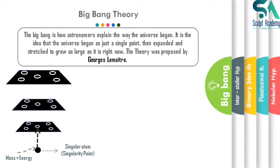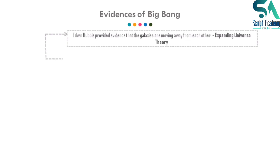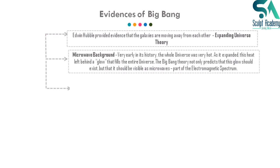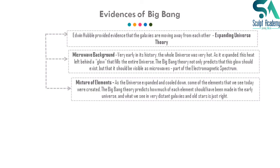What were the evidences for the Big Bang? First, Edwin Hubble with his telescope proved the expanding universe theory — that the universe is still expanding and galaxies are moving away from each other. This is known as the Expanding Universe Theory and is the first evidence for the Big Bang. Second is the microwave background: very early in its history, the whole universe was very hot. As it expanded, this heat left behind a glow filling the entire universe, visible as microwaves — part of the electromagnetic spectrum, and this has been observed.